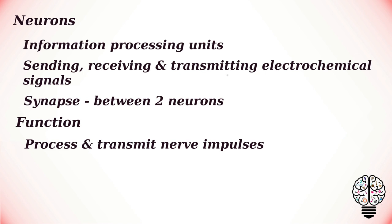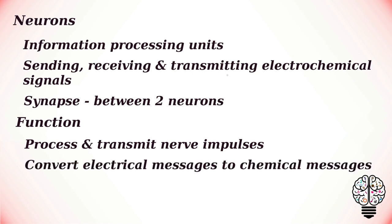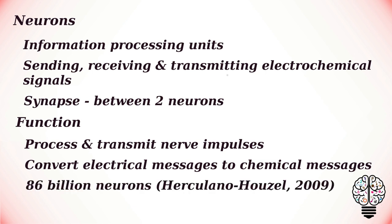The basic function of a neuron is to process and transmit nerve impulses from and to the nervous system. Neurons can simultaneously receive and integrate stimuli — that is, impulses either from the body or other sources. They can convert electrical messages into particular neurotransmitters, that is chemical messages, following the neurotransmission or synaptic transmission process.